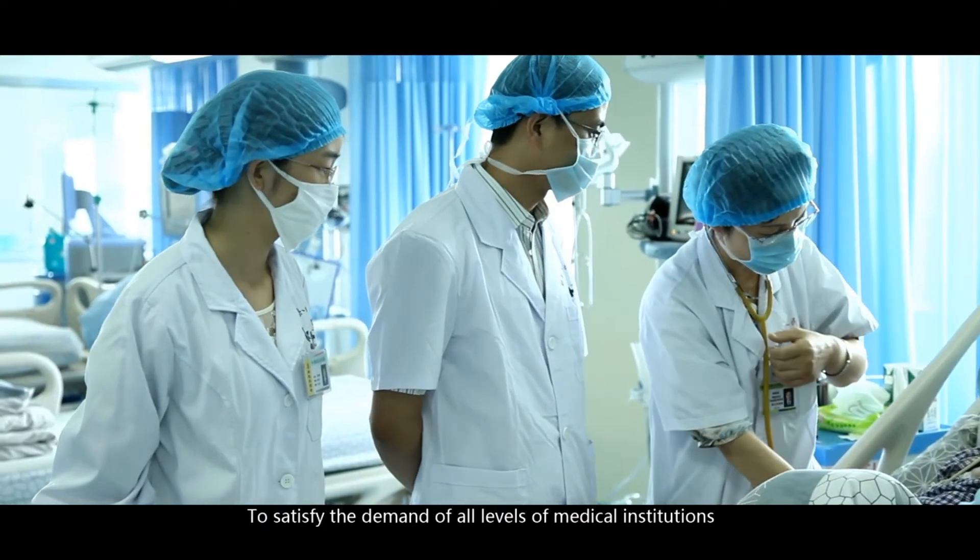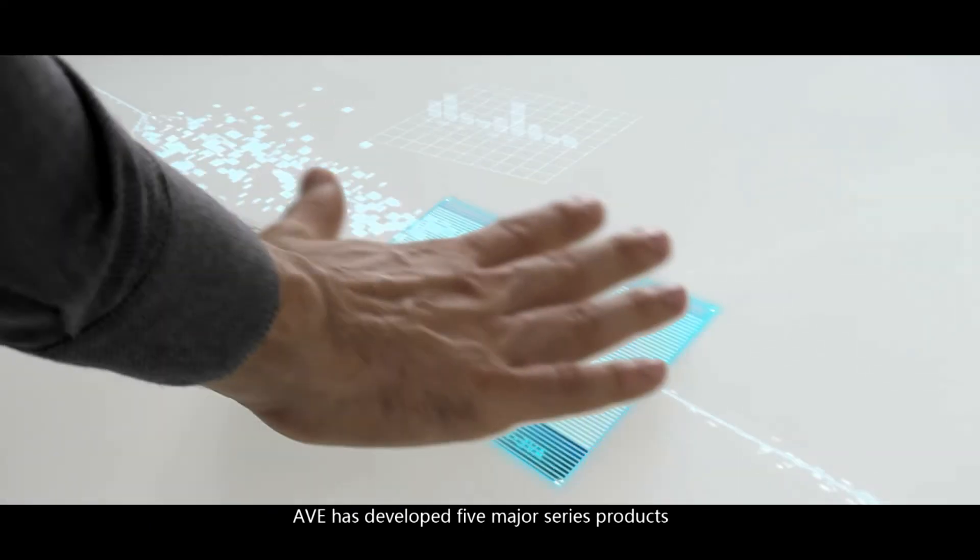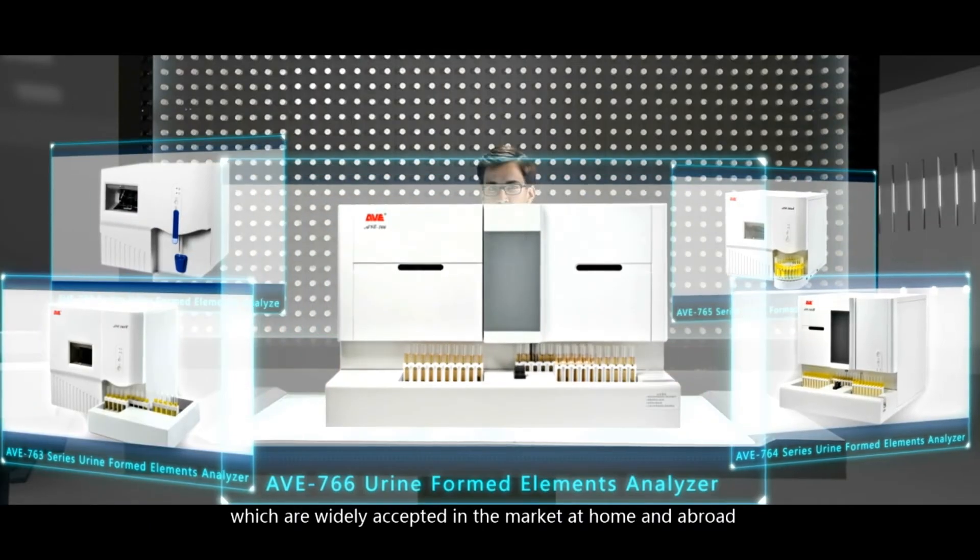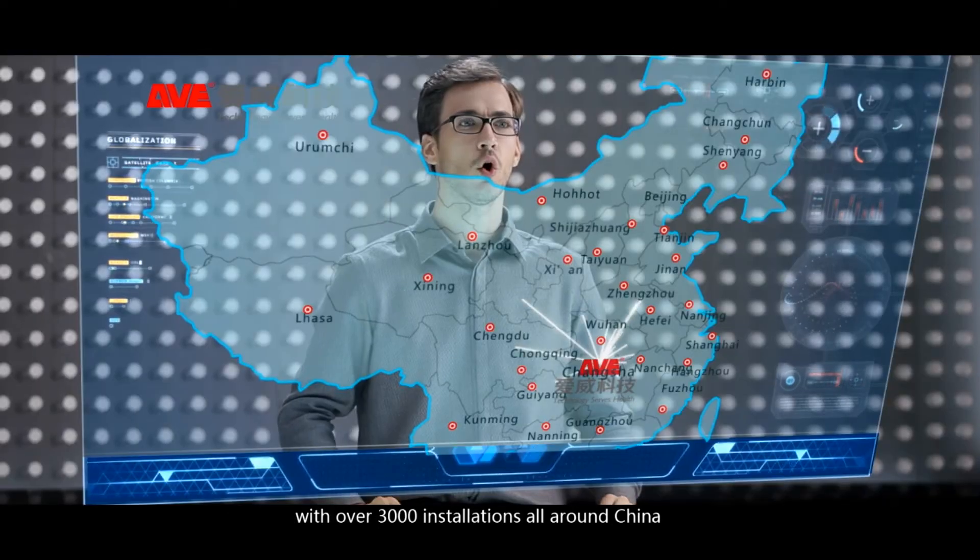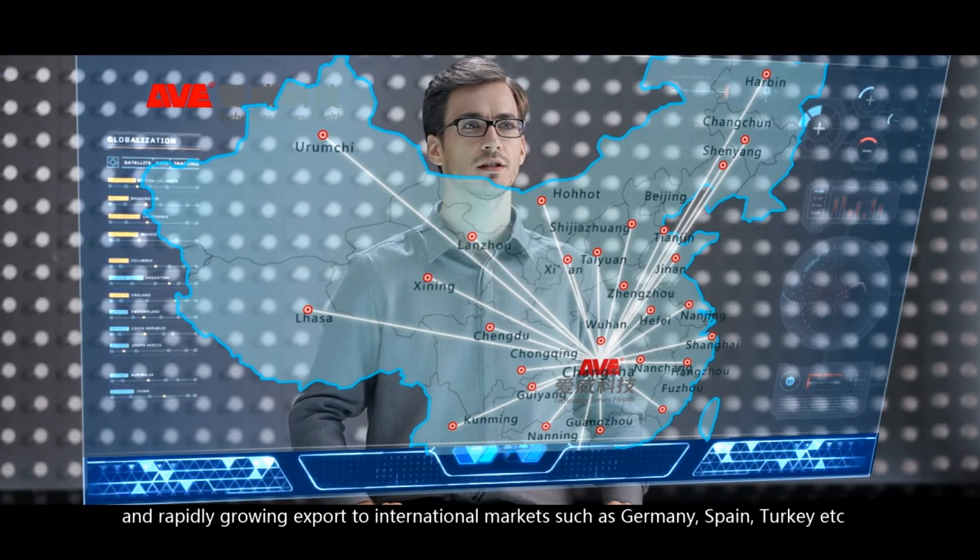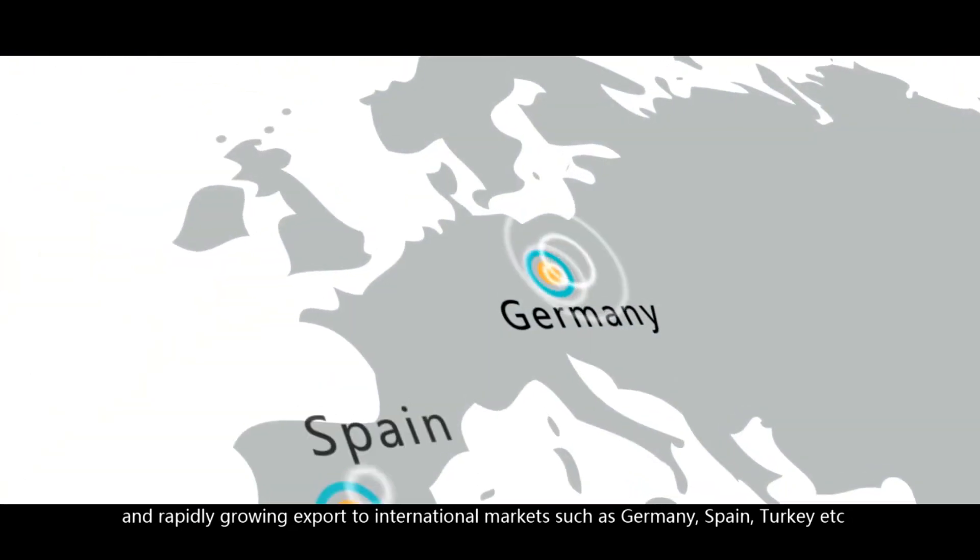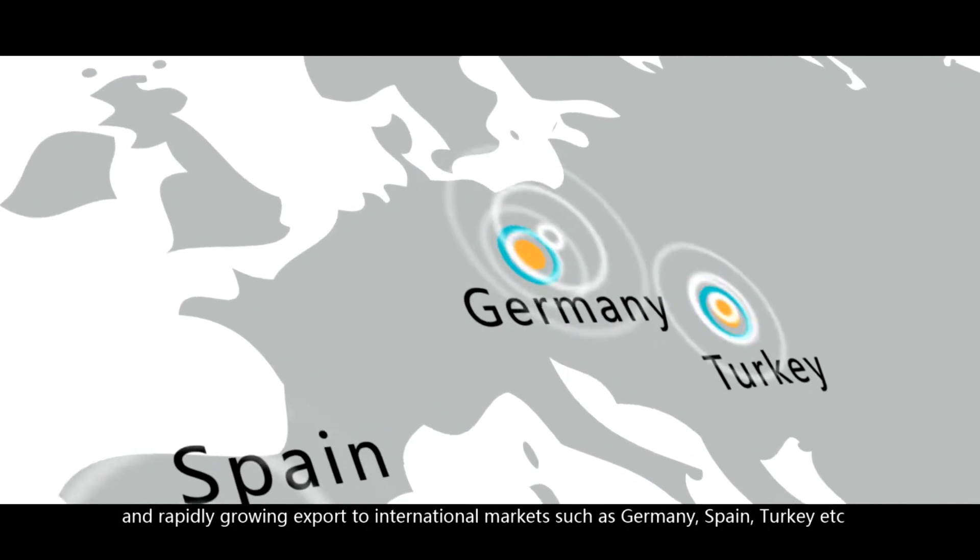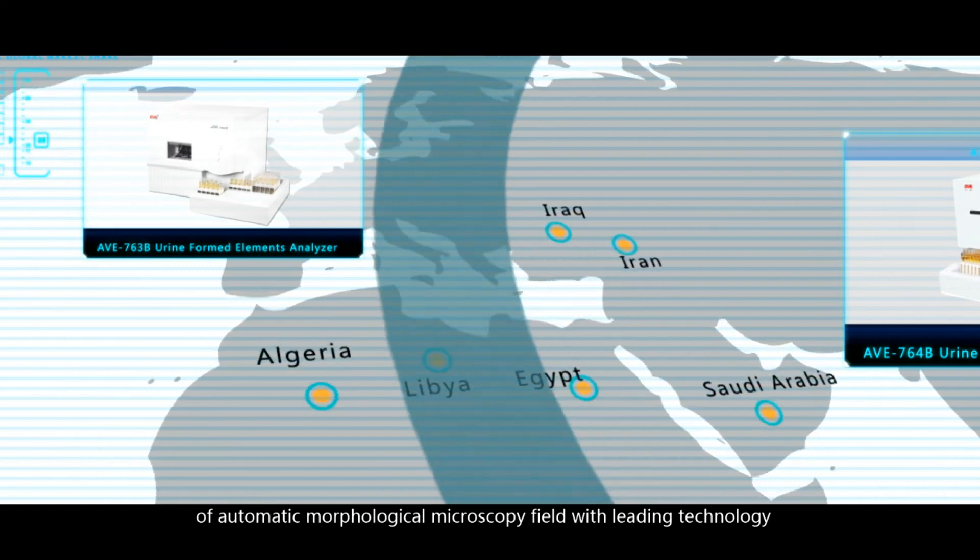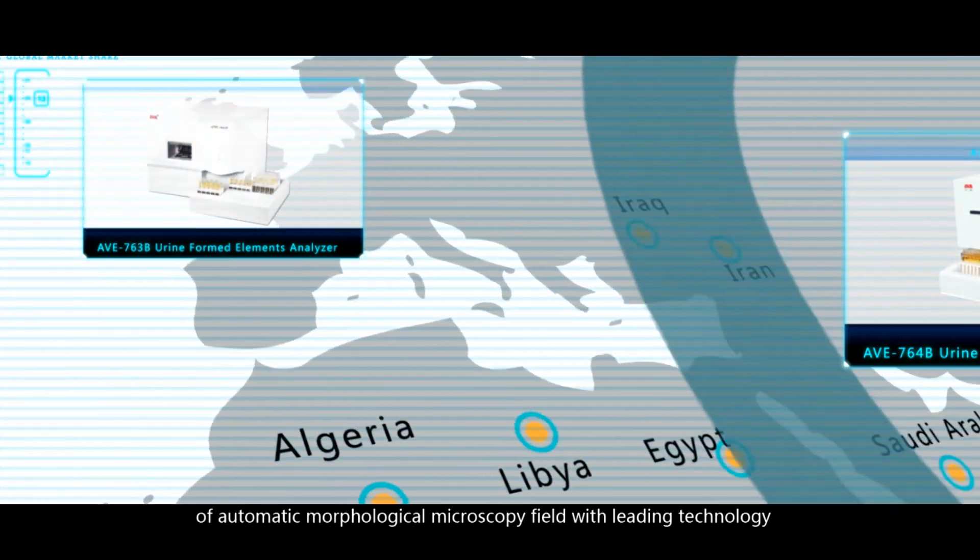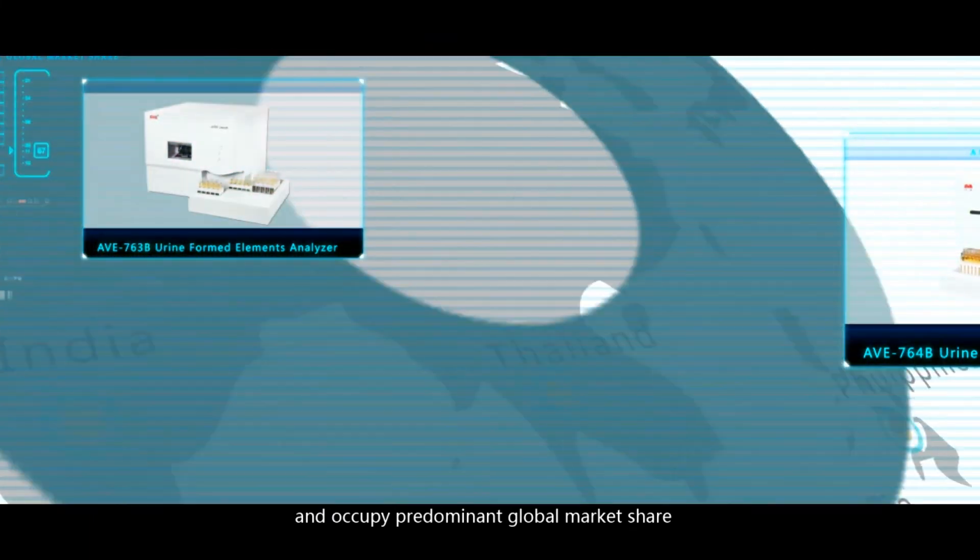To satisfy the demands of all levels of medical institutions, AVI has developed five major series products which are widely accepted in the market at home and abroad with over 3,000 installations all around China and rapidly growing export to international markets such as Germany, Spain, Turkey, etc. AVI-76 series analyzers fill in the technical blank of automatic morphological microscopy field with leading technology and occupy predominant global market share.